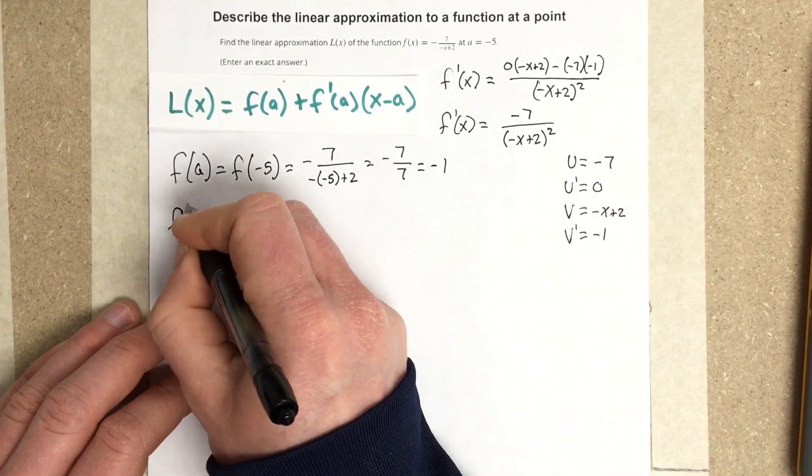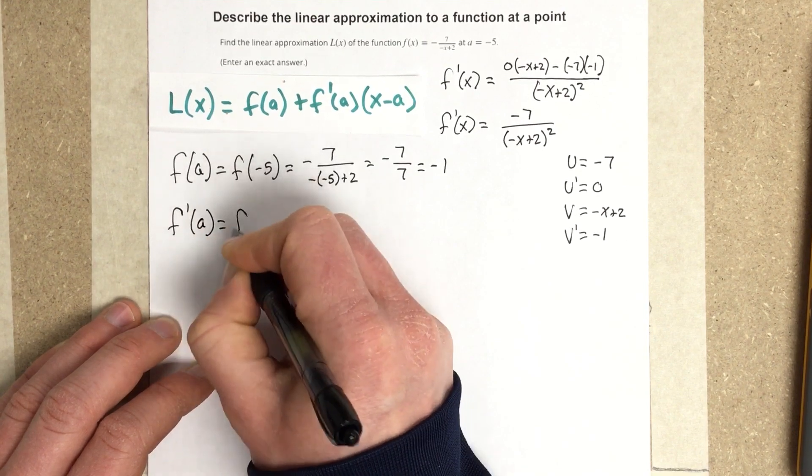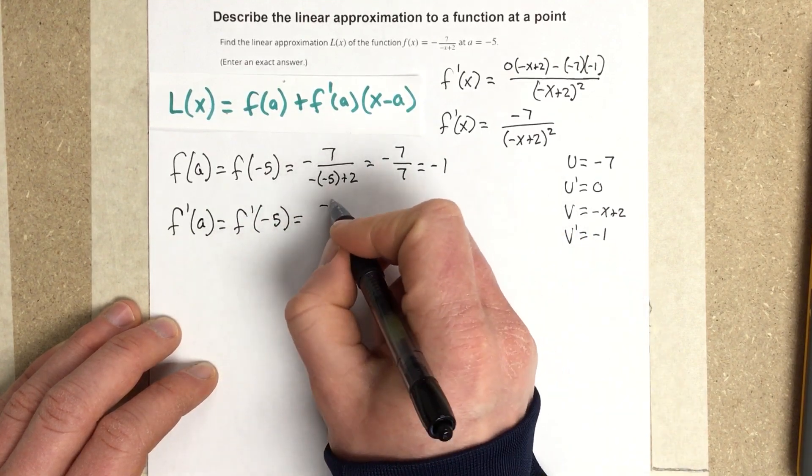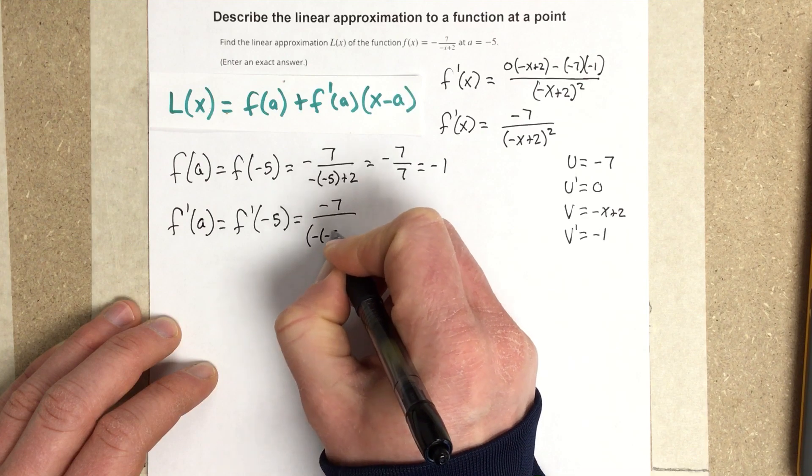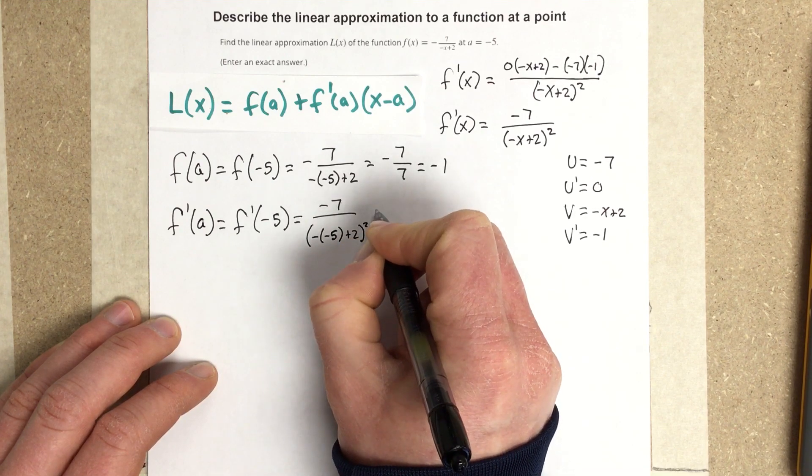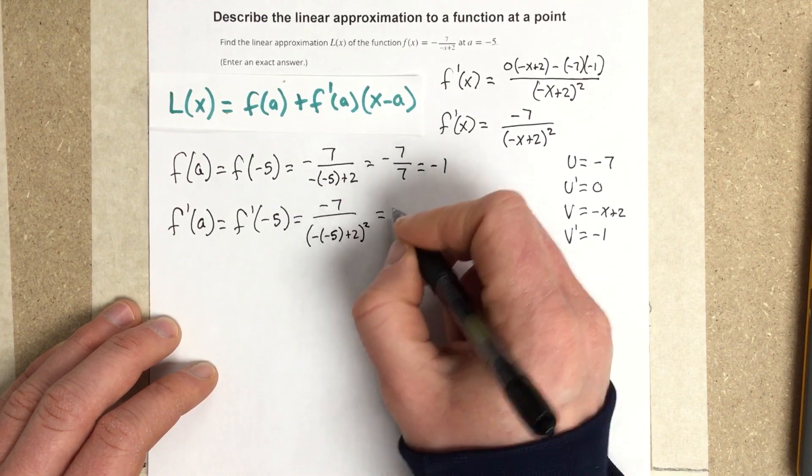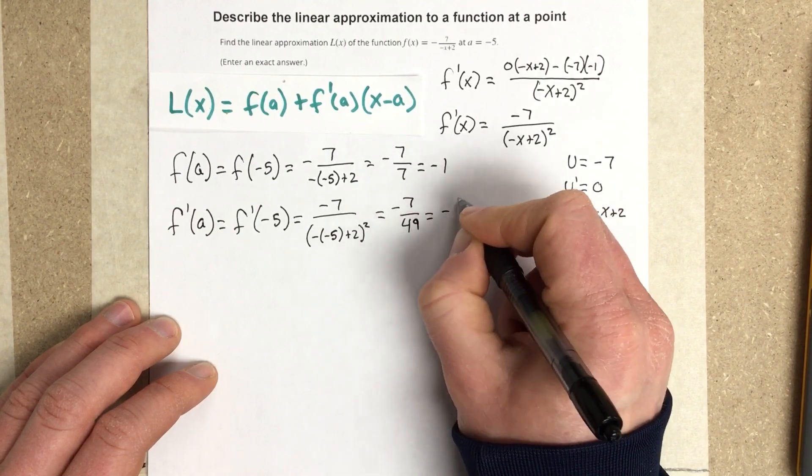And we'll do F prime of A, which is F prime of negative 5, which in our case will be negative 7 over this squared. So this is going to be 7 in here squared, so I get negative 7 over 49, which is negative 1 seventh.